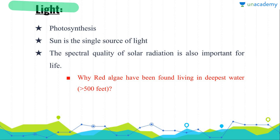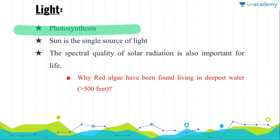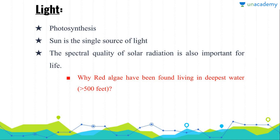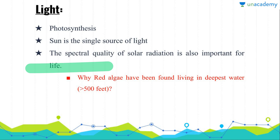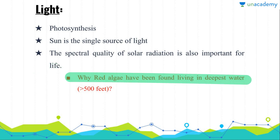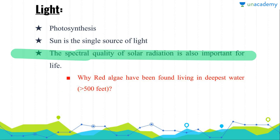Now we have light. Light is the third most important environmental factor. It is responsible for photosynthesis, which is the primary source of energy in our food system. The sun is the single source of energy in our ecosystem, and the spectral quality of solar radiation is also important for life. You have to answer a question: why have red algae been found living in the deepest water, at more than 500 feet? I am waiting for your answer.